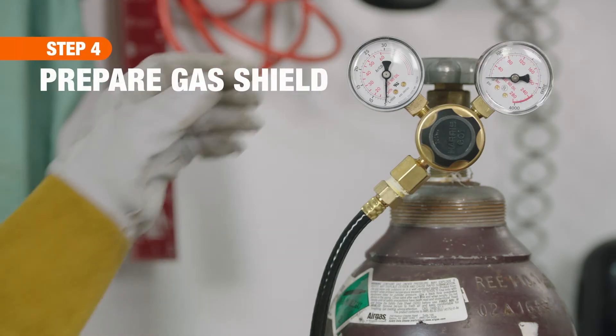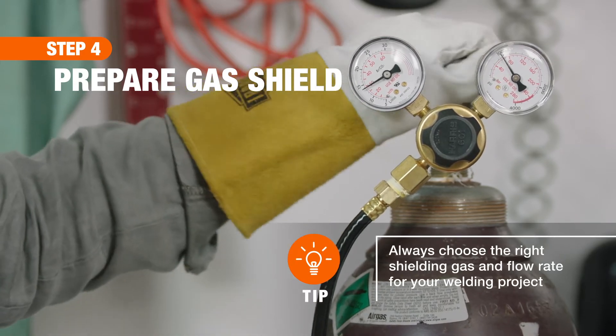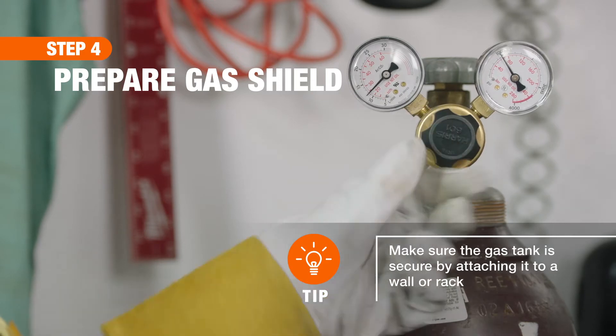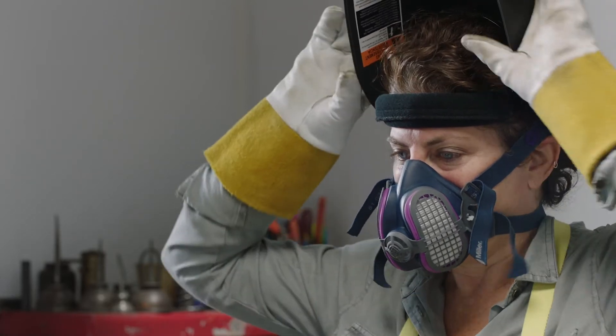Additionally, an argon CO2 mix shielding gas should be used to help protect your weld from contamination. Adjust the flow as needed. Check the regulator on the gas tank to find the range. For this project, we will be at a flow rate of 38. Make sure your helmet is pulled down covering your face.